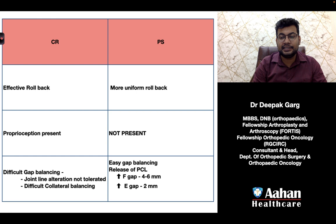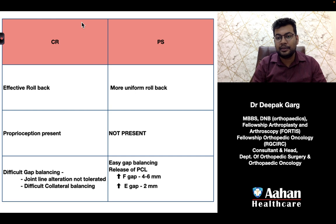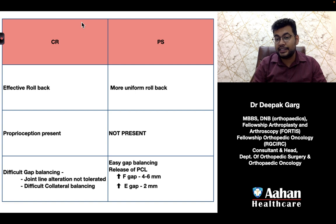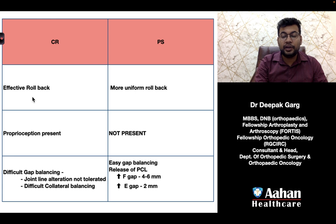In cruciate retaining, there is an effective rollback that replicates normal knee biomechanics, including medial pivoting — the lateral side moves more than the medial side. With recent inserts, specifically the deep dish insert in CR, this replicates a more natural knee, giving a more effective rollback in cruciate retaining implants.